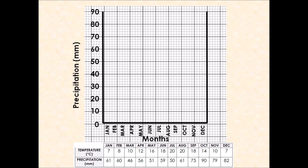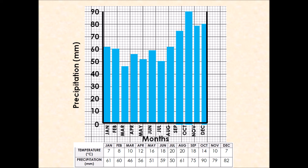Now start drawing your precipitation data as bars on the graph. You'll end up with 12 bars, one per month. I've left a small gap between each bar to make it easy to distinguish the months, but it's perfectly fine to have your bars touching — draw whatever is easiest for you to interpret and read later on.